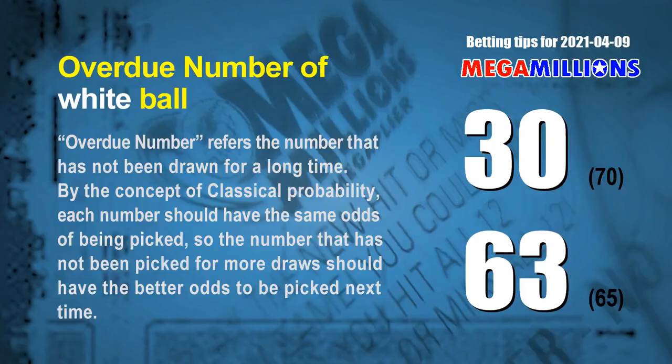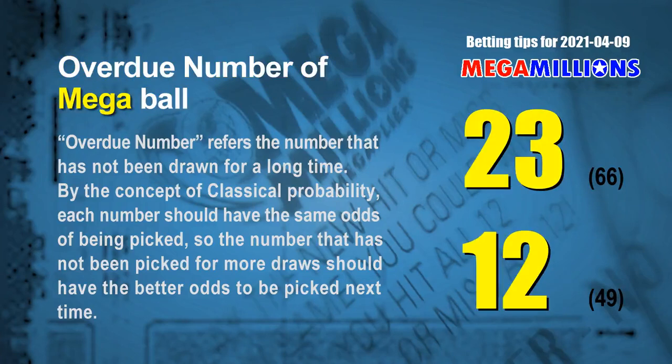The final information is overdue numbers. An overdue number is one that has not been drawn for a long time. By classical probability, a number not picked for more draws should have better odds to be picked next time. The two most overdue white balls are 30 and 63 — white ball 30 has not been drawn for 70 draws, white ball 63 for 65 draws. The two most overdue mega balls are 23 and 12 — mega ball 23 has not been drawn for 66 draws, mega ball 12 for 49 draws.